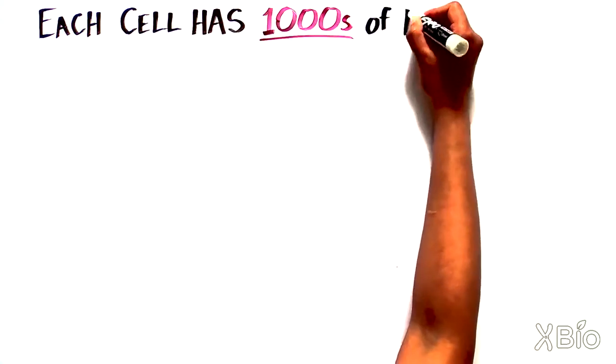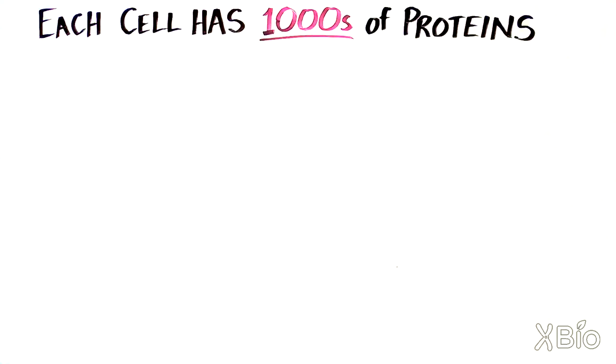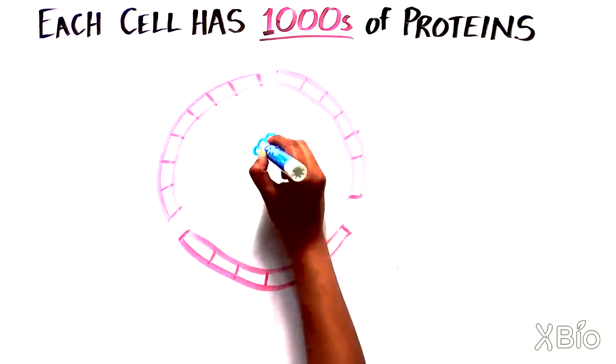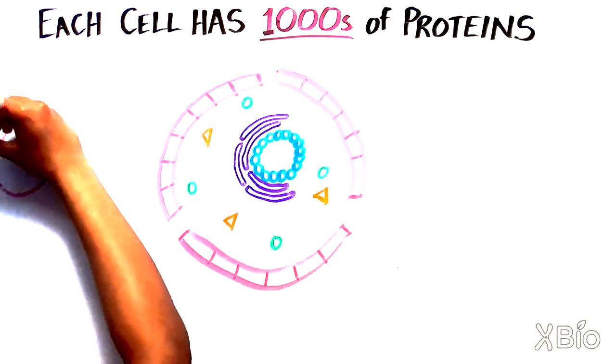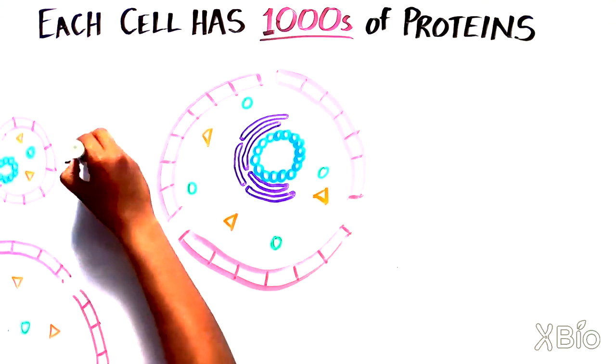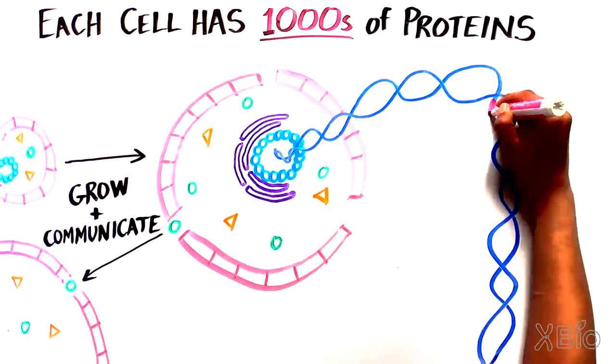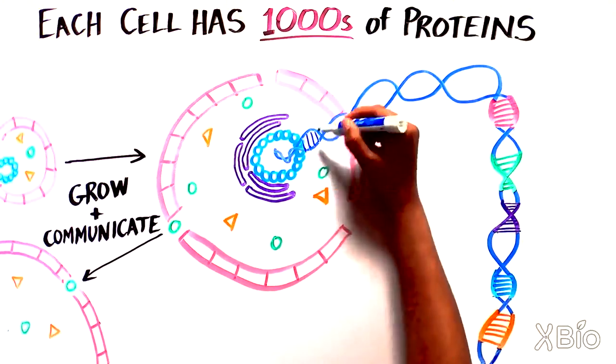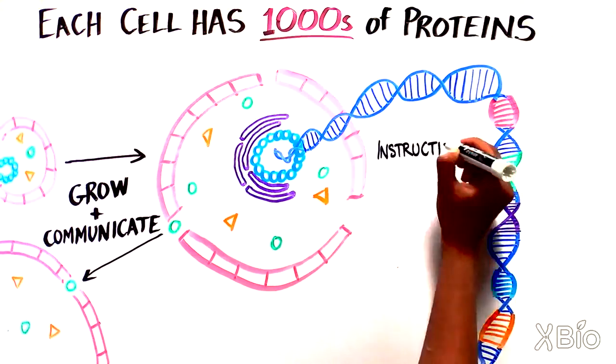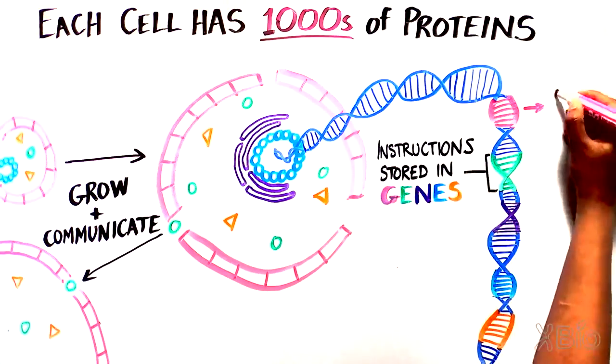Did you know that each cell has thousands of different types of proteins? Proteins are the building blocks of our cells and they have many different important functions, like helping cells grow and communicate with other cells. To be able to make all of these different proteins, our cells use a set of instructions stored in our genes, which are made of DNA.